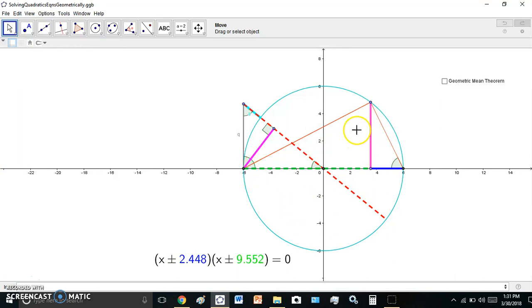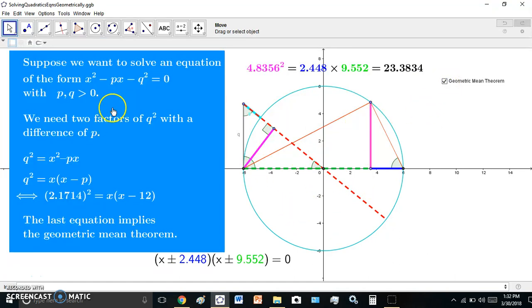To find it, what they did was the following. Let's suppose we have an equation of this form: x squared minus px minus q squared equals zero, with both of these greater than zero. Then we'd need two factors of q squared with a difference of p. And if we take q squared over to the other side, that's exactly what we've got. So x differs with x minus p with a difference of p.